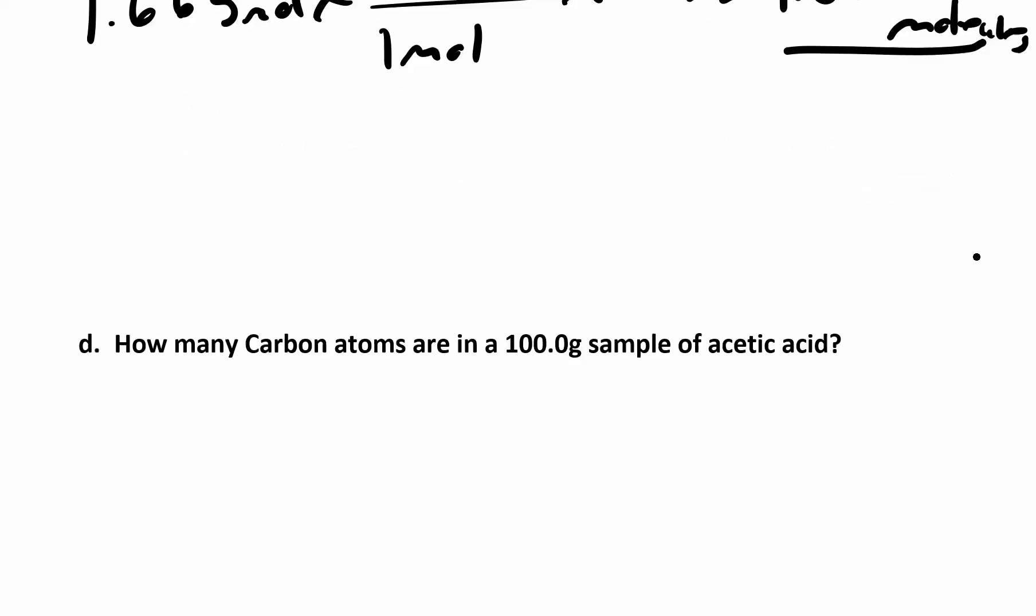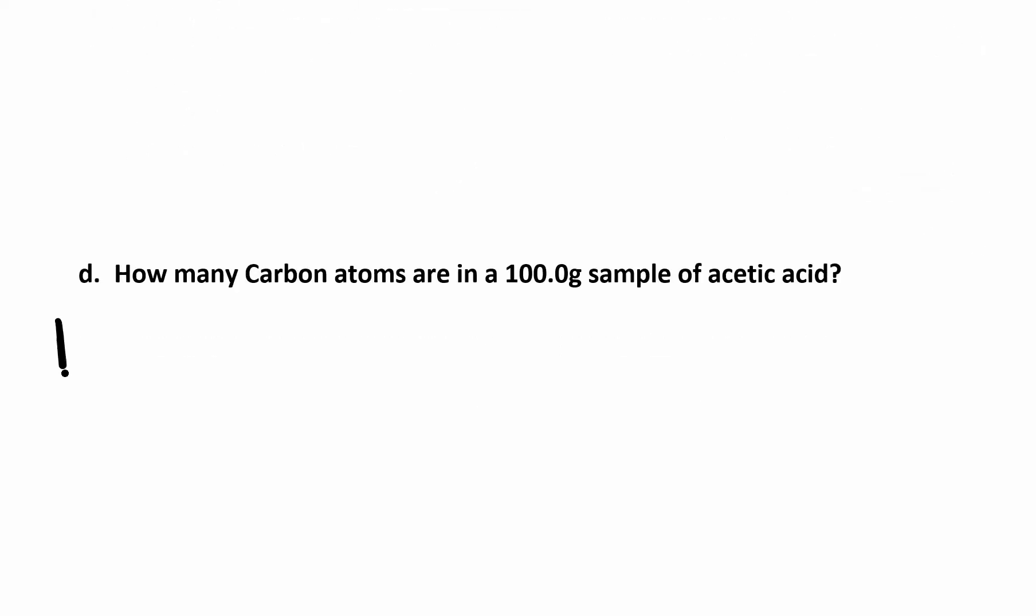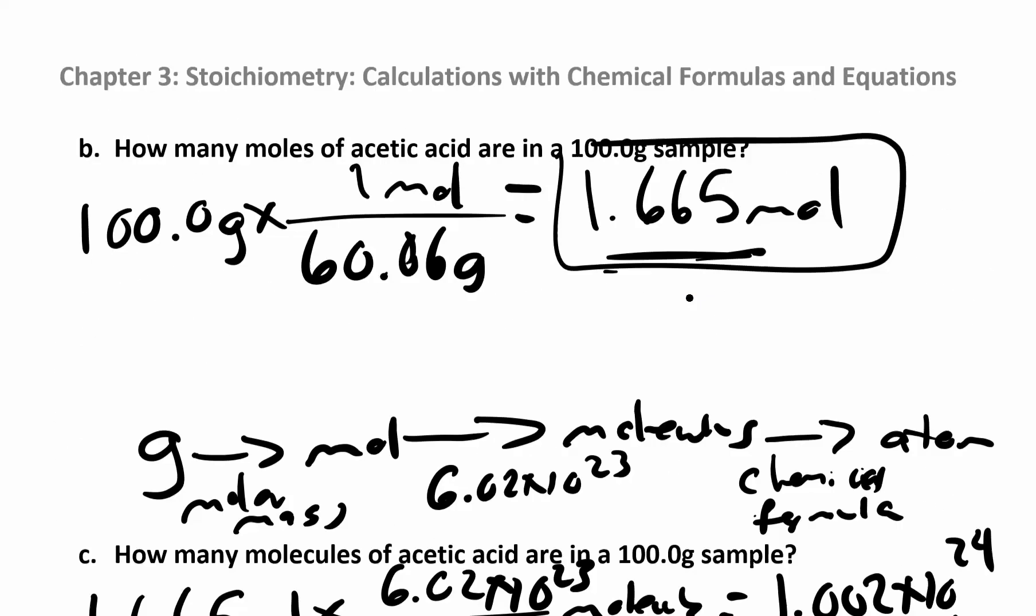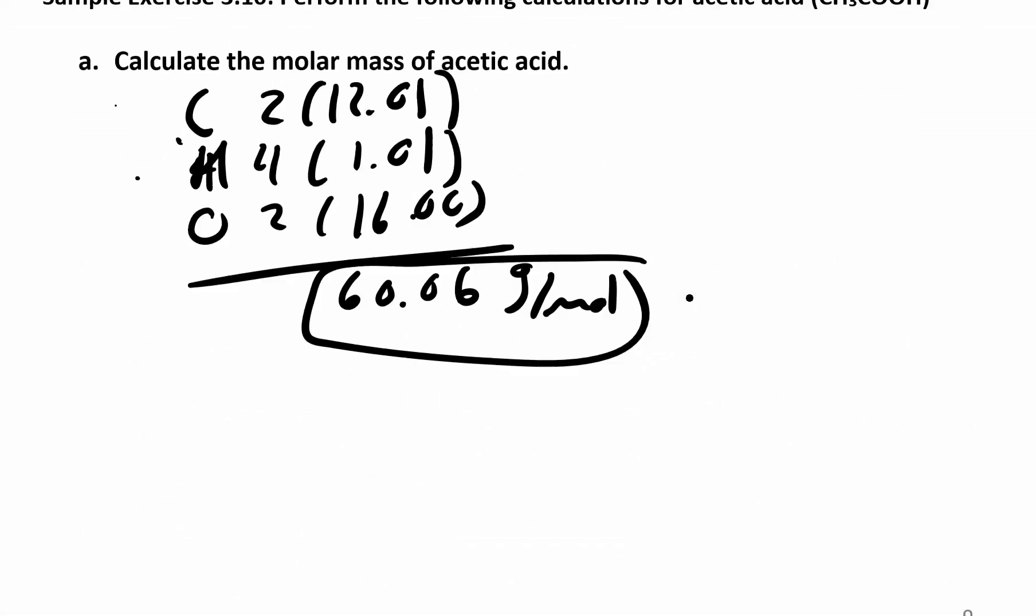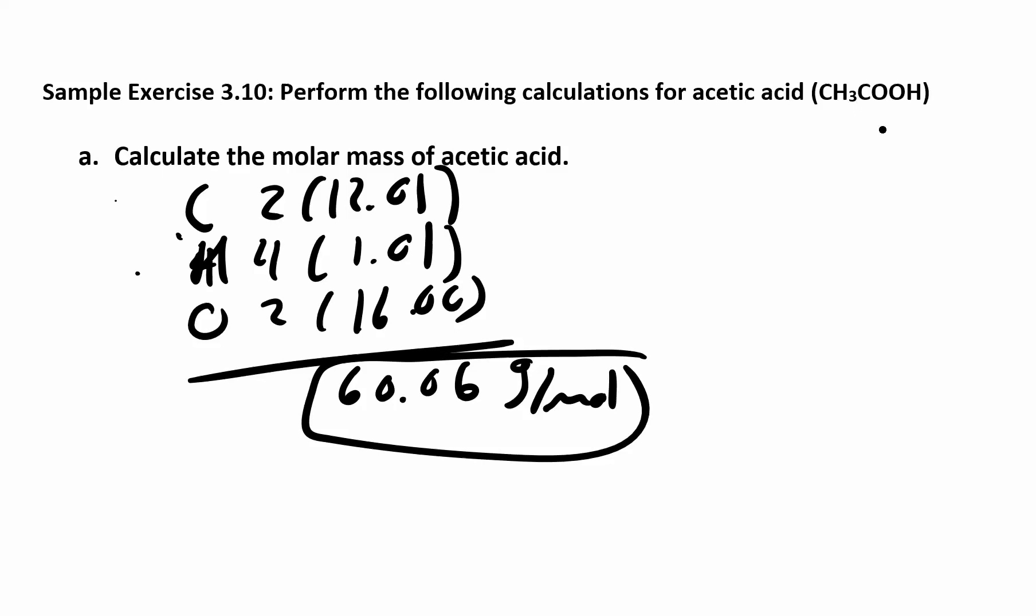We're at molecules. We had 1.002 times 10 to the 24 molecules, and in this compound, acetic acid, we go back to the formula. We have 2 carbon atoms per molecule.